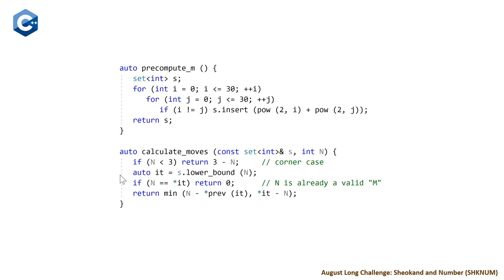If we're not one of those values, we call our binary search function lower bound, which retrieves the value either equal to or greater than our current value n. Then we check if our iterator found is equal to our current value, we return zero because n is already a valid m. If not, we get the iterator before this to get the value to the left, then return the minimum of n minus the value to the left and the value to the right minus n.